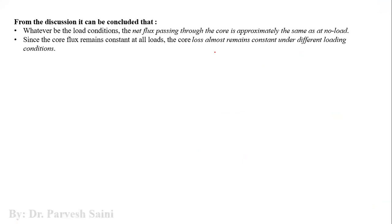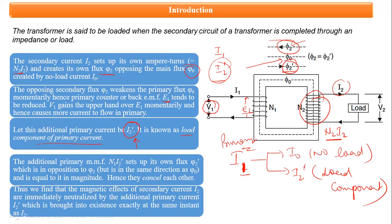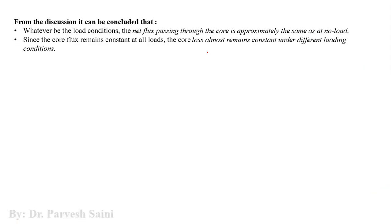When phi2-dash opposes phi2, it cancels the effect of the secondary flux, so the net flux in the iron core remains unchanged at phi-naught. The magnetic effect of i2 — in terms of the secondary ampere turns — is neutralized by the additional flux produced by the additional primary current i2-dash.